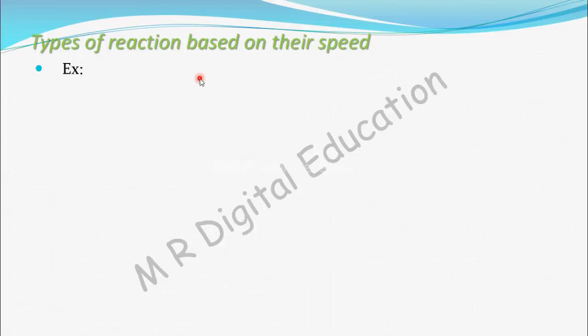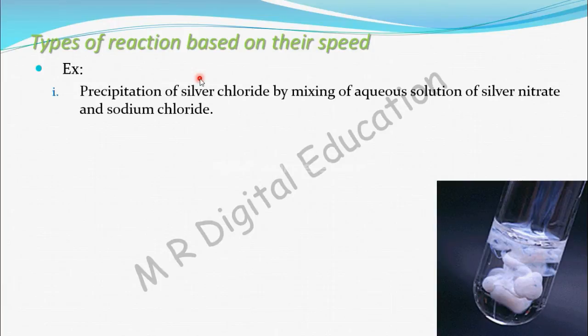See some examples. Precipitation of silver chloride by mixing aqueous solution of silver nitrate and sodium chloride. As soon as you mix AgNO3, that is silver nitrate, and sodium chloride, there will be white precipitation of AgCl, that is silver chloride. It is an immediate reaction.